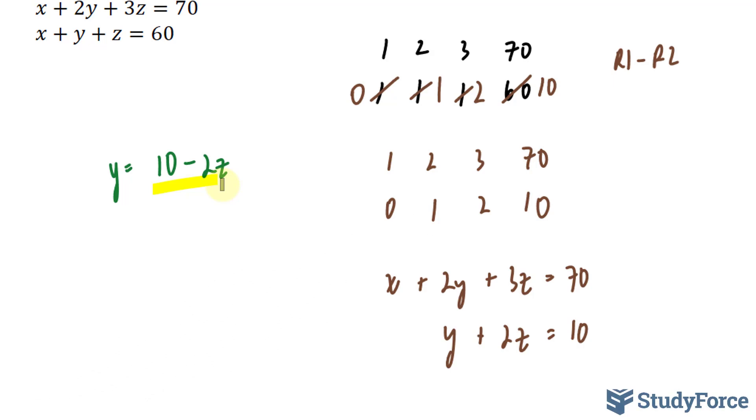I'll substitute ten minus two z into this equation, and then I'll solve for x. So if I substitute this into here, I'll end up with x plus two bracket ten minus two z plus three z is equal to seventy. Notice that my equation is in terms of x and z.